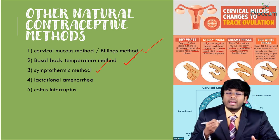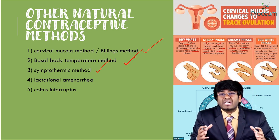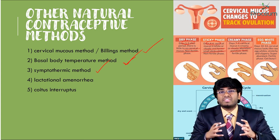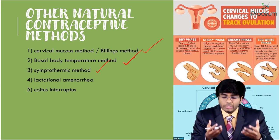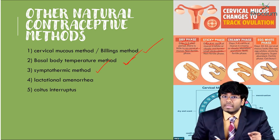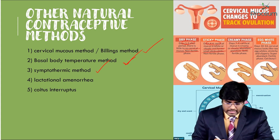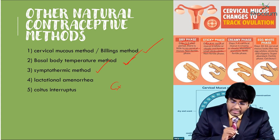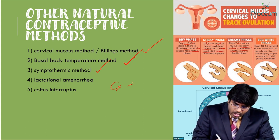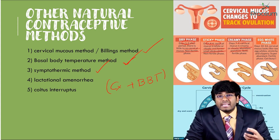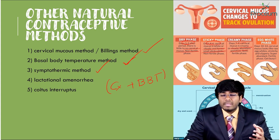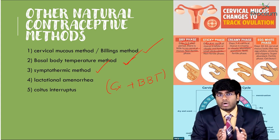There is one more method which is just a combination of the previous ones — the symptotermal method. Here, both the cervical mucus consistency and the basal body temperature are checked together. These two criteria are taken into account, and it is known as the symptotermal method.